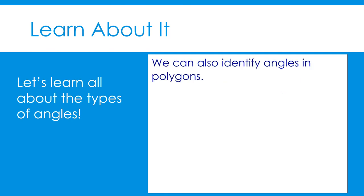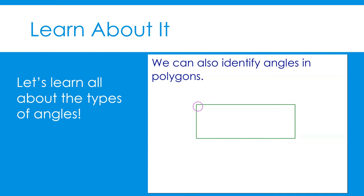We can also identify angles in polygons. Let's take this rectangle, for example. It has four angles at each of its four vertices. The two line segments, or sides of the rectangle, are perpendicular to each other. Therefore, this angle measures 90 degrees and is a right angle. We can label the right angle with a square where the two sides meet. All of the angles in a rectangle are the same — they are all right angles, equal to each other, and all measure 90 degrees.